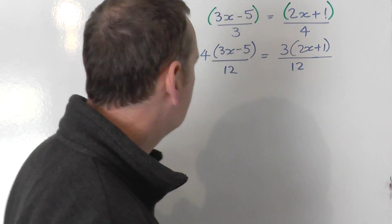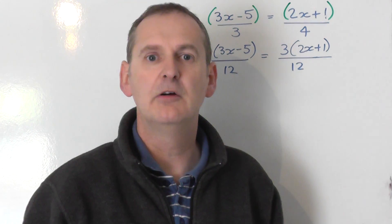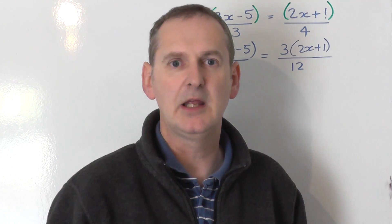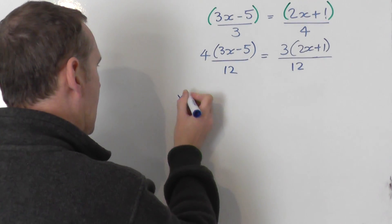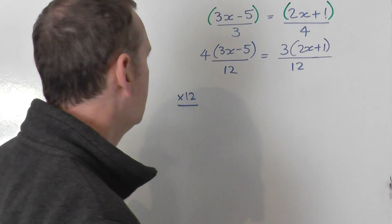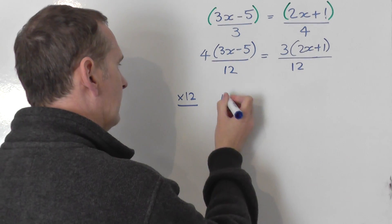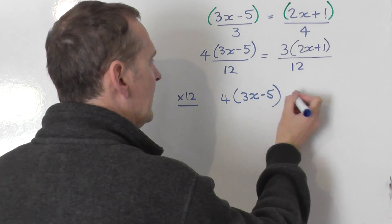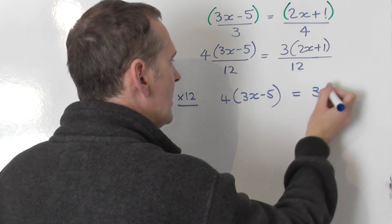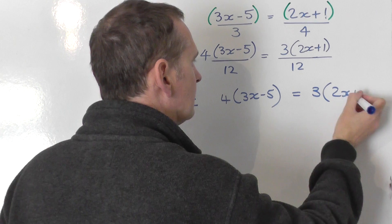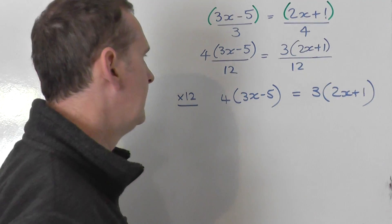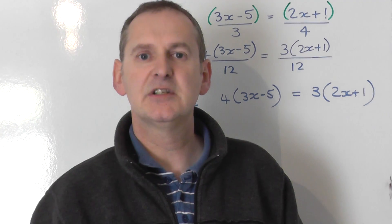So now I've got fractions on both sides still, but they're both over 12. I can get rid of both of those 12 straight away by simply multiplying everything by 12. If I multiply this side by 12, I just get 4 lots of 3x minus 5. If I multiply this side by 12, I get 3 lots of 2x plus 1. The fractions now have disappeared.